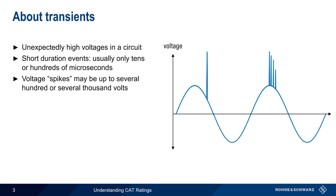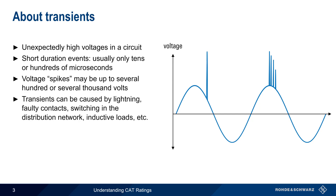There are many causes of transients, such as lightning, faulty contacts, switching in the distribution network, inductive loads, etc.